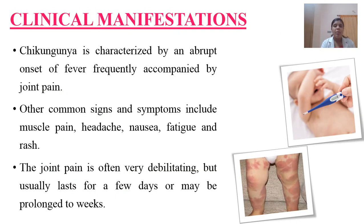Chikungunya is mainly characterized by an abrupt onset of fever which is frequently accompanied by severe joint pain. The other common signs and symptoms include muscle pain, headache, nausea, fatigue, and rashes over the body. The joint pain is often very severe but usually may last for a few days and can prolong up to weeks.